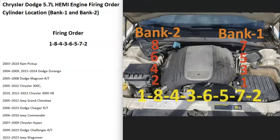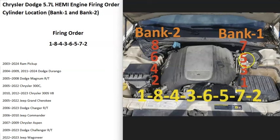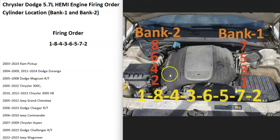Basically when you open up the hood, on the right side — the driver's side of the vehicle — the cylinder locations are going to be one, three, five, seven. And on the left-hand side it's going to be two, four, six, eight.